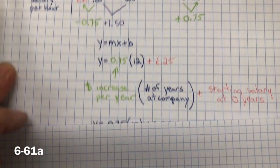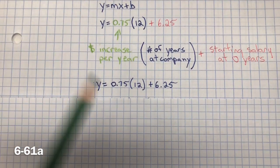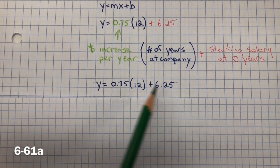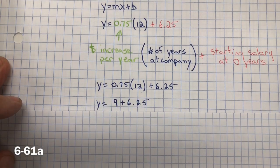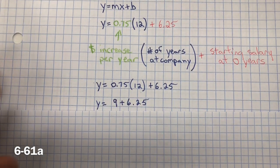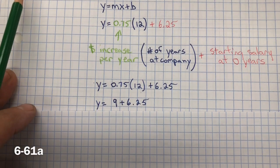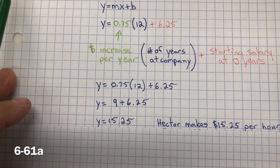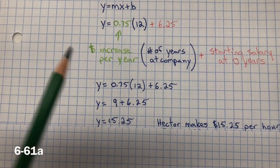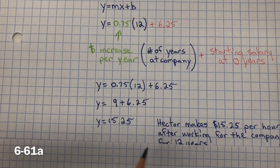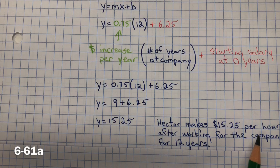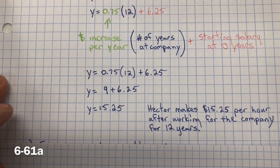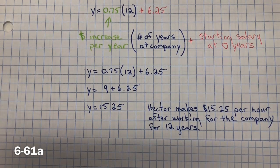So now I simplified this equation. 75 cents multiplied by 12 equals 9, and 9 plus $6.25 gives me $15.25. So Hector makes $15.25 per hour after working for the company for 12 years.